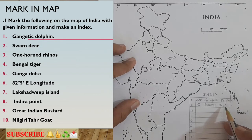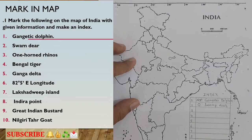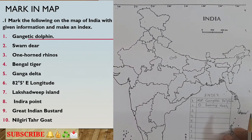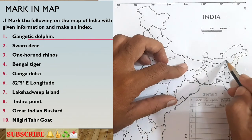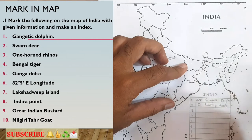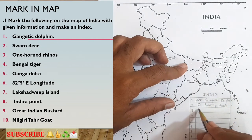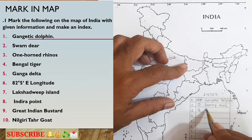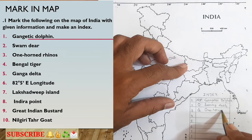The next thing asked is one-horned rhinos. One-horned rhinos can also be seen in the state of Assam. To mark the one-horned rhinos, I will select a triangle. I will draw a triangle on Assam in the map, and in the index I will write 'One-Horned Rhinos' next to the triangle symbol.